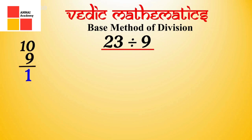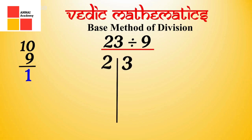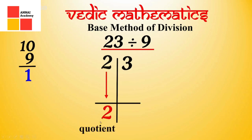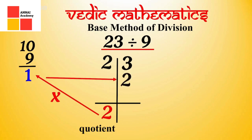Because we have to divide 23 by a single-digit number, from the right-hand side of 23 we will give a little gap after one number, i.e. after 3, and divide this number into two parts. On one side is 2 and on the other side is 3. Now we will note 2 as it is below — this is our quotient. We will multiply 2 by the given complement: 2 into 1 is 2. Write it below 3. Now we will add 2 and 3 together: 3 plus 2 is 5. And this is your remainder.